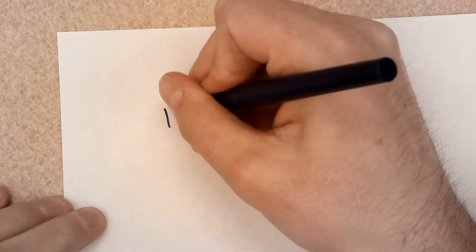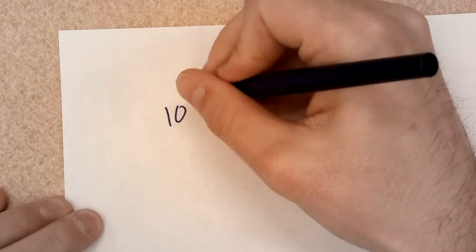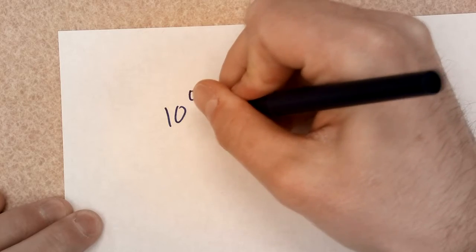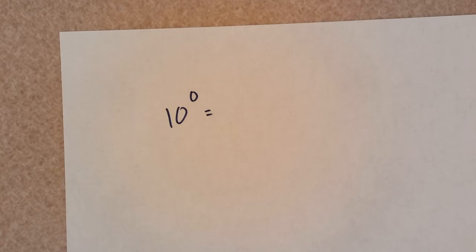Let's start with a blank sheet of paper here, and I'm going to write down this power base 10 exponent zero. What the heck does that even mean? If you figure it out, let me know.